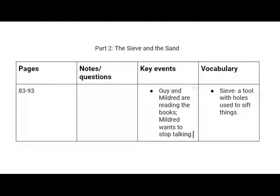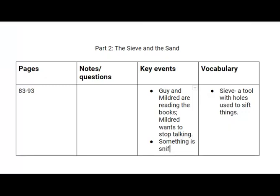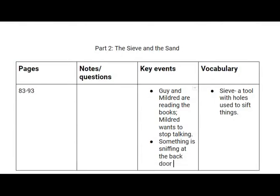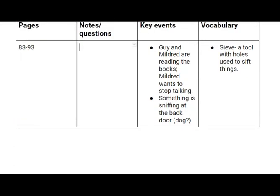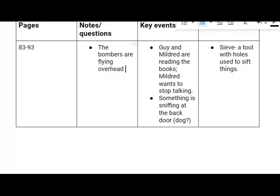Let's add a couple of things into our key events. One — something is sniffing at the back door (dog), because we don't know if it's a dog or the electronic dog that is out to murder people. We also want to add: the bombers are flying overhead. We can think about what Beattie mentioned — make people forget about war. If the country is going to war, it tells us there's a lot more going on. The people in charge are aware of what's going on outside this society, but nobody else knows — they're keeping it from them, which has implications that are probably not good.